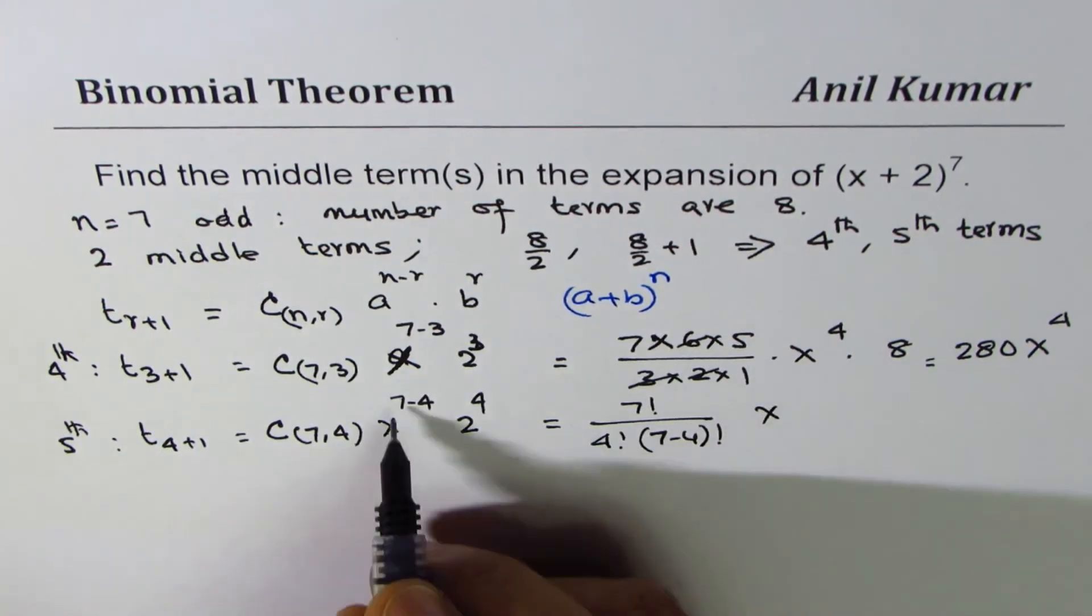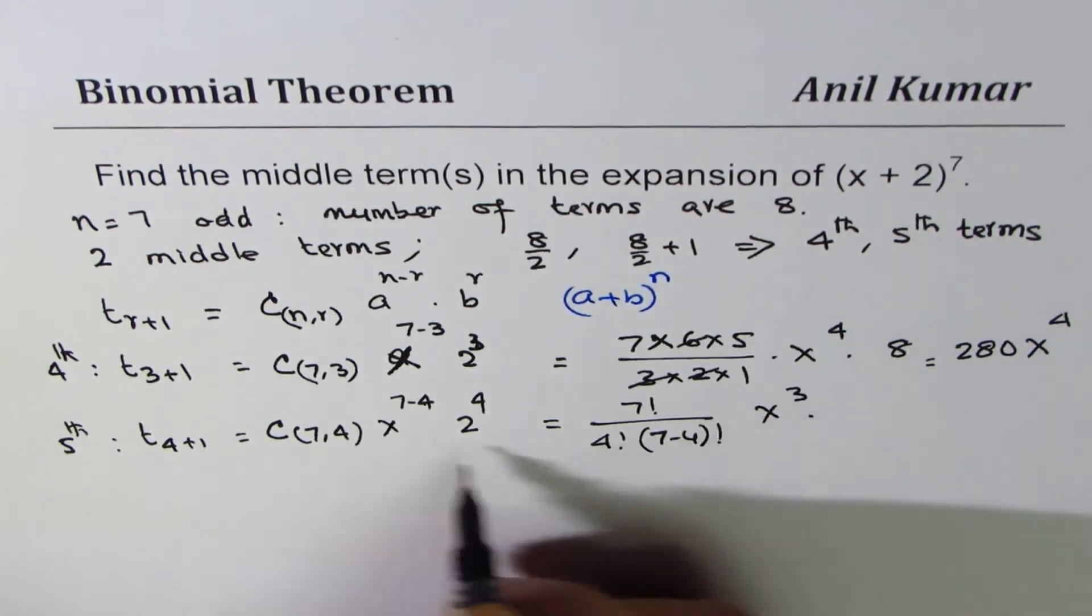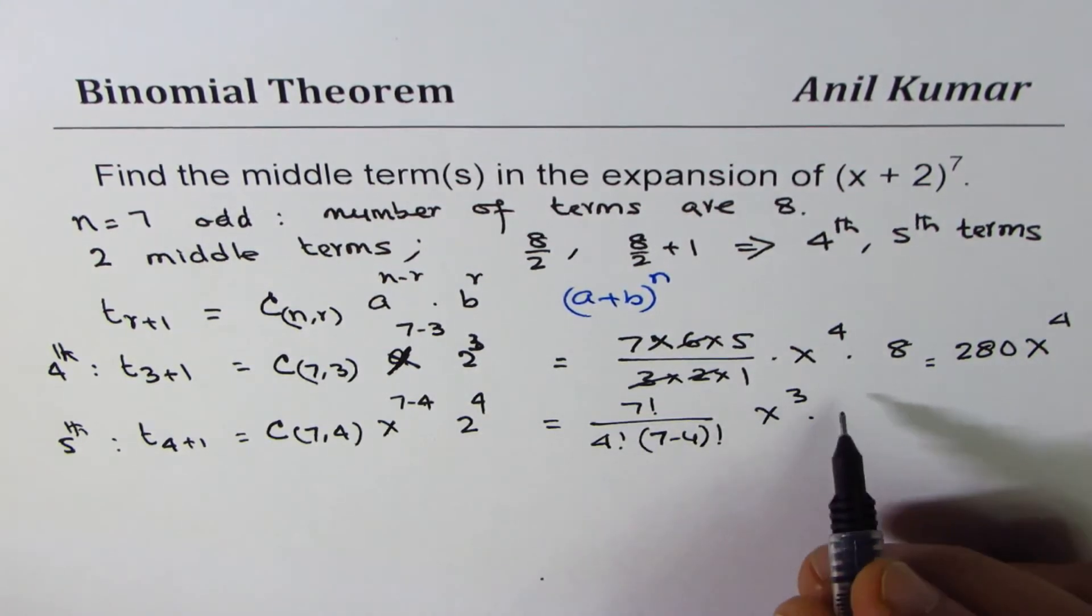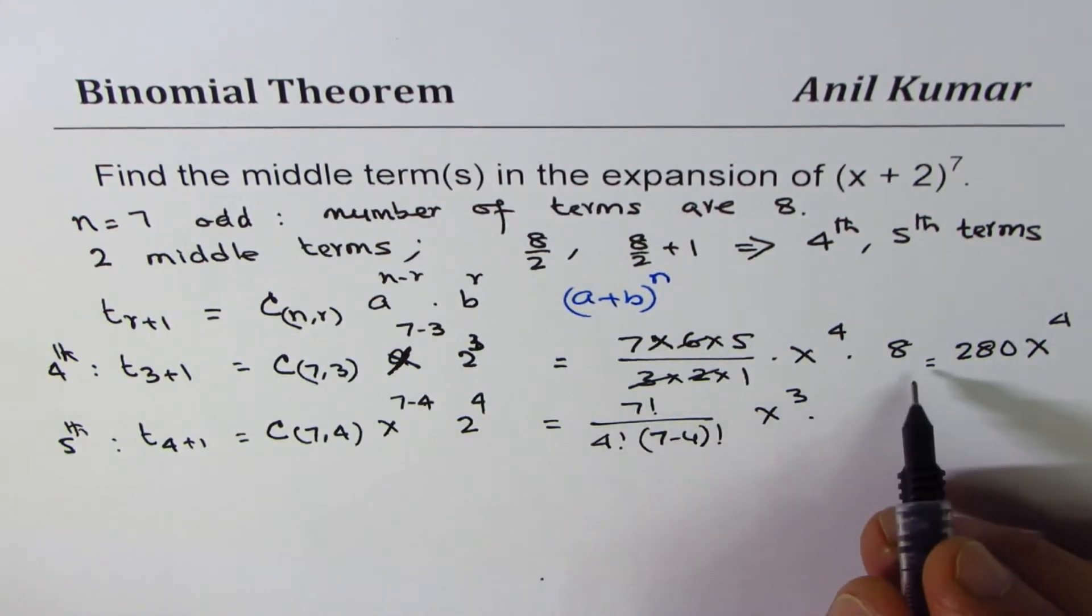Times X to the power of 7 minus 4 is 3, times 2 to the power of 4 which is 16.